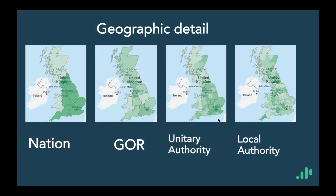We also have geographic detail down to local authority. In the same way that we break down SIC and SOC codes, we can go from nation to government office region — for my region that would be Yorkshire and Humber — then to unitary authority such as Lancashire or South Yorkshire or Humberside, and then to local authority, which is the smallest region available — so Leeds, for example. It's very important to be able to break down into geographic detail from national to local authority categorisation, mainly because what happens at national level doesn't necessarily translate to local authority level.